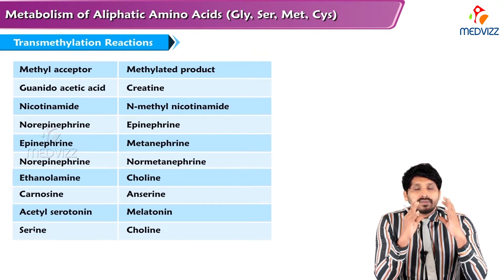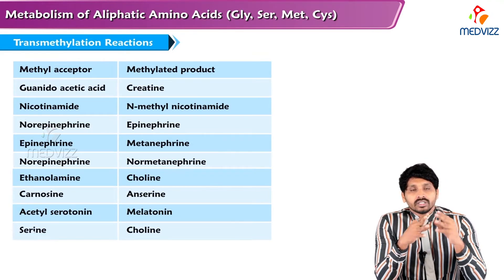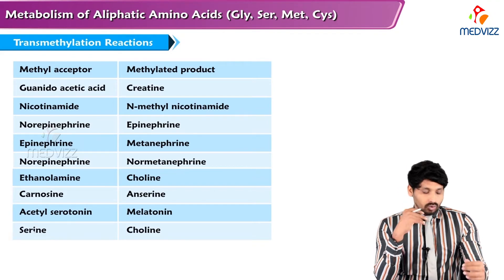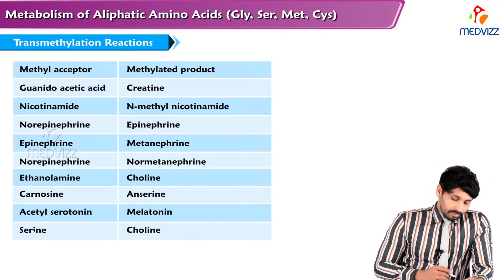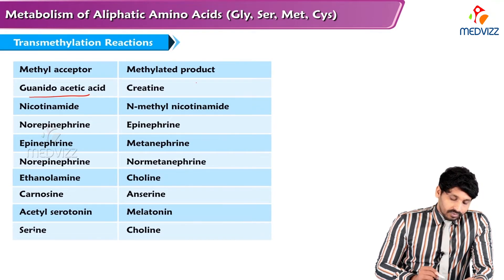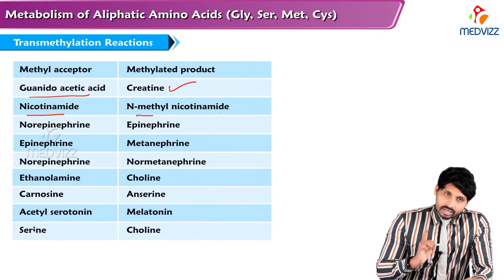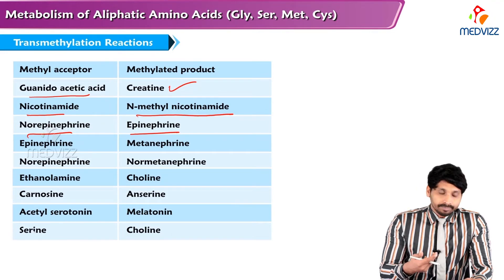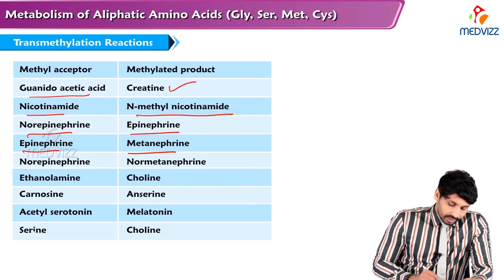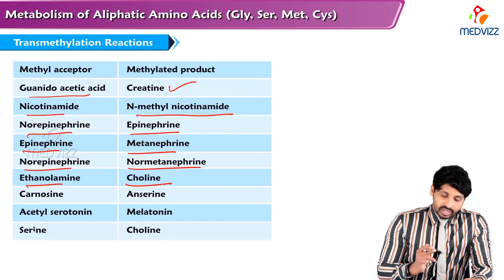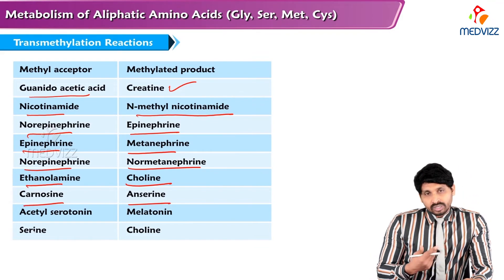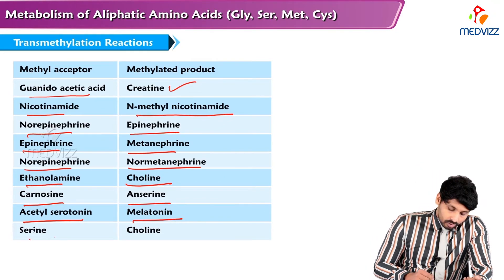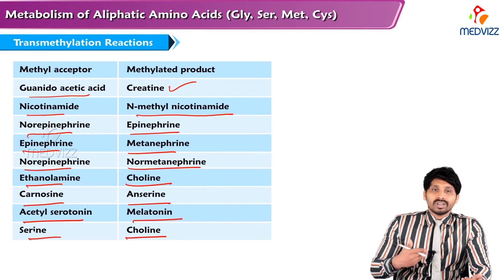SAM is the active methyl donor in the body — wherever a methyl group is required in chemical reactions, SAM provides it. Transmethylation reactions requiring SAM include: guanidoacetate to creatine, nicotinamide to N-methyl nicotinamide, norepinephrine to epinephrine, epinephrine to metanephrine, norepinephrine to normetanephrine, ethanolamine to choline, carnosine to anserine, polyamine synthesis, acetyl serotonin to melatonin (in tryptophan metabolism), and serine to choline.